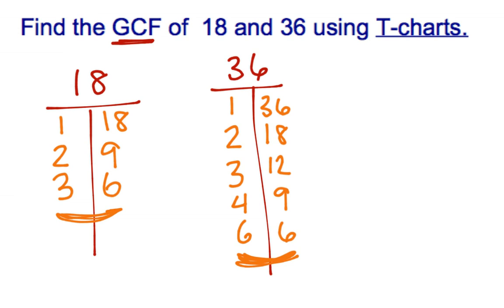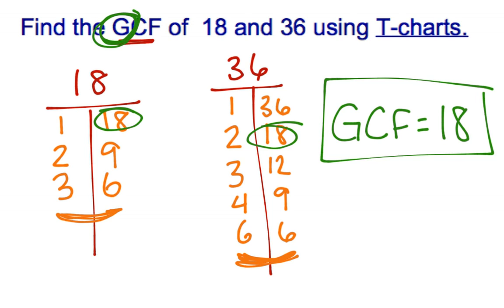So now we look to see the greatest, the highest number, the biggest number that's in both lists is 18. The biggest one in both T-charts. So for 18 and 36, the greatest common factor or the highest common factor is 18.